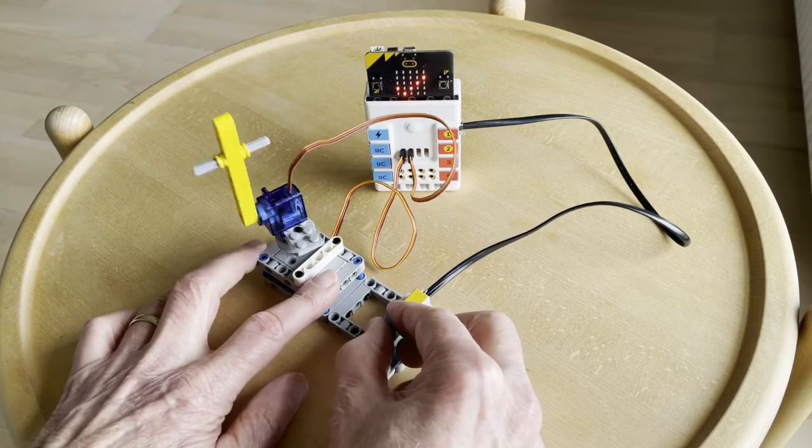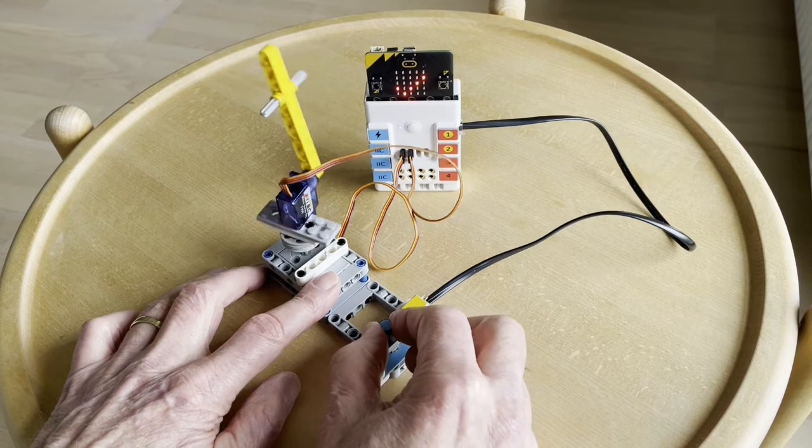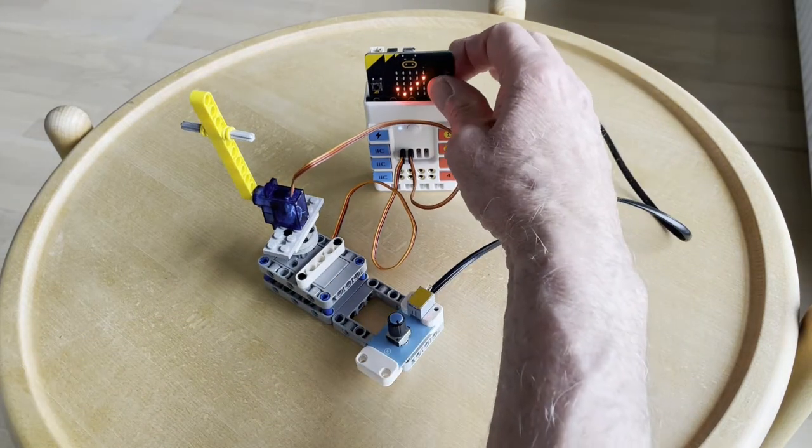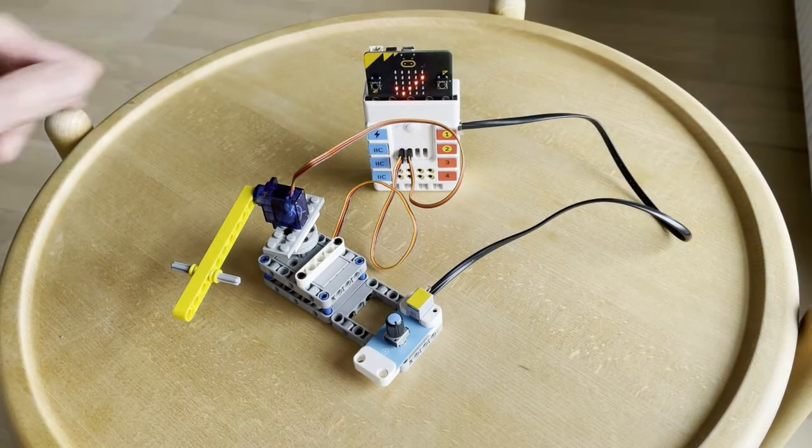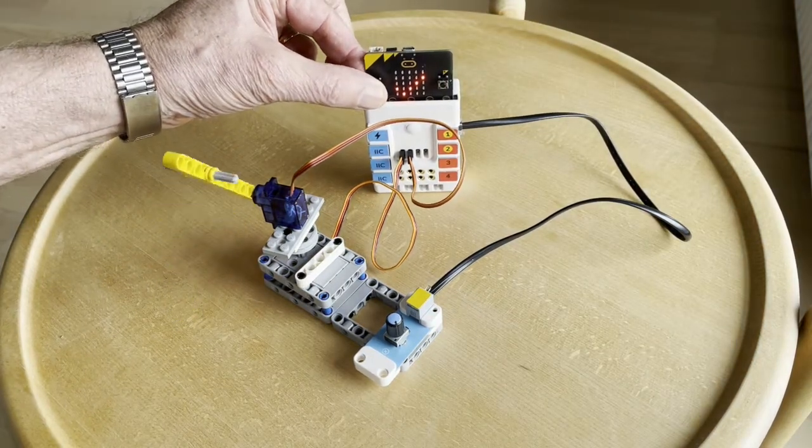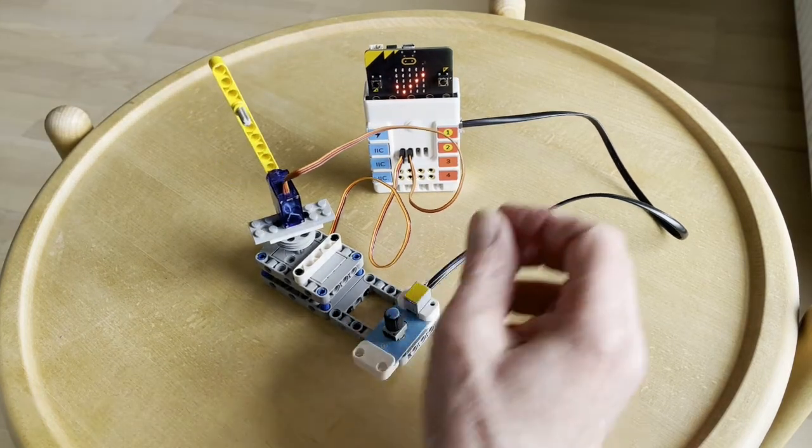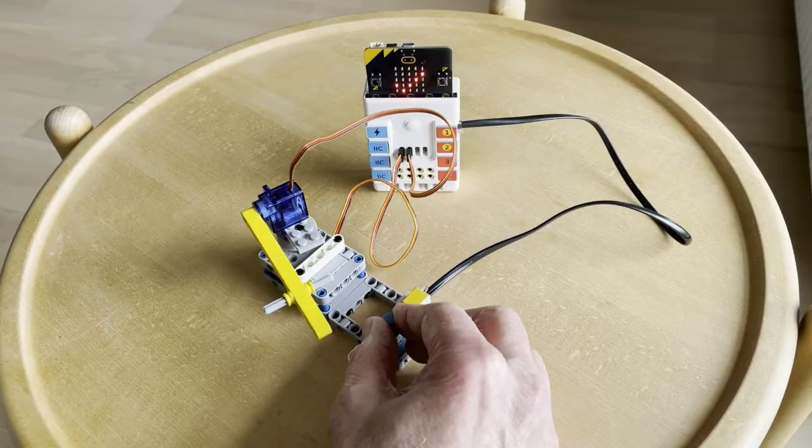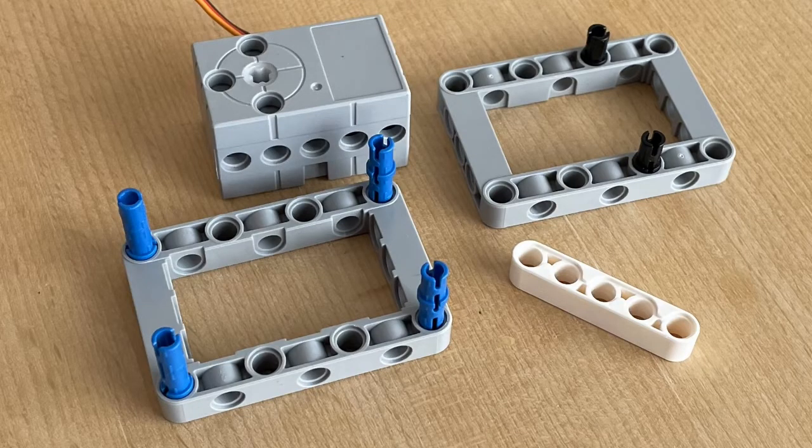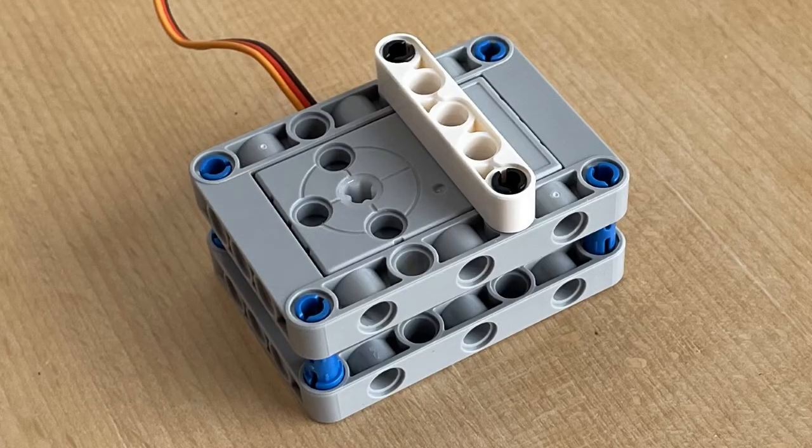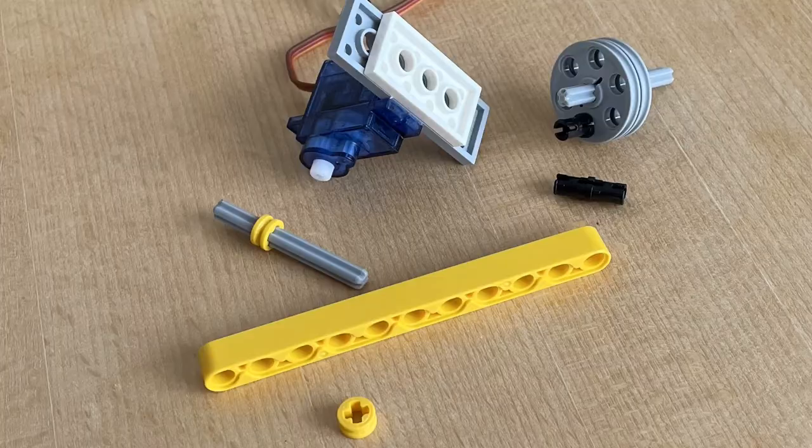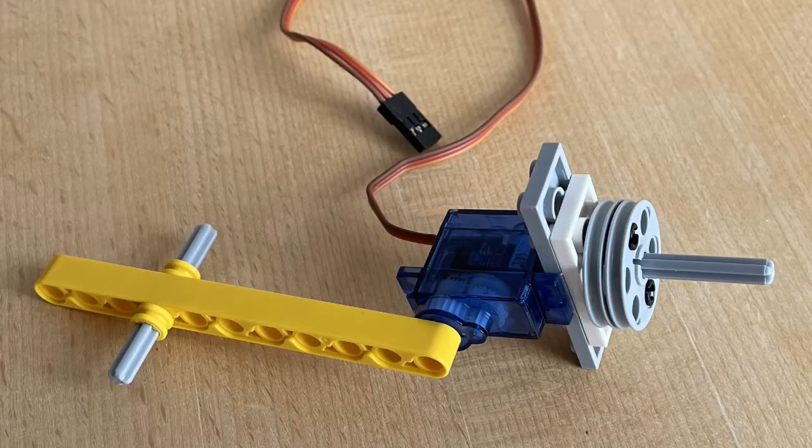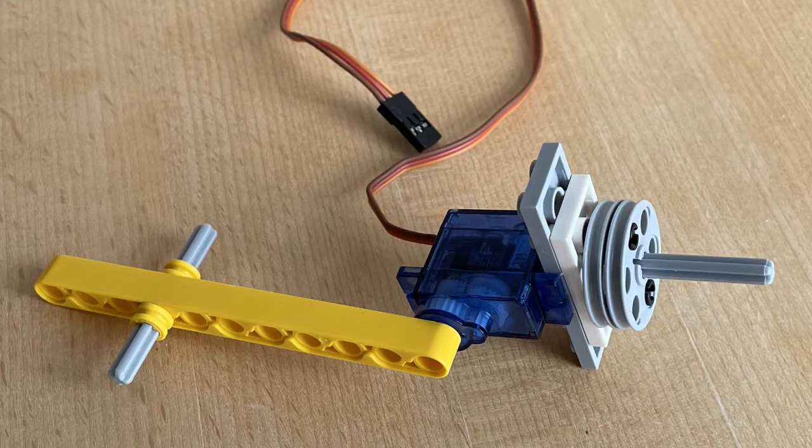Now we look at a new setup where two servo motors are used. The setup is built as shown here. Unfortunately, only one servo motor is included in the set, so I found a 180 degree servo that I glued to a Lego brick as shown here.